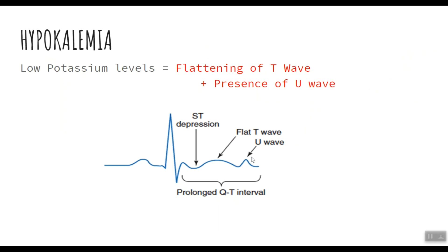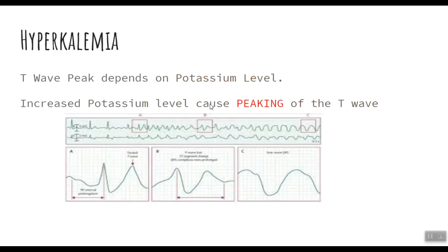In hyperkalemia, increased potassium causes the T-wave to peak. Simply speaking, the height of the T-wave totally depends on the potassium level. If potassium is high, the T-wave will spike; if potassium is low, the T-wave will flatten. I hope this helps you pick up both hyperkalemia and hypokalemia ECGs on the exam.